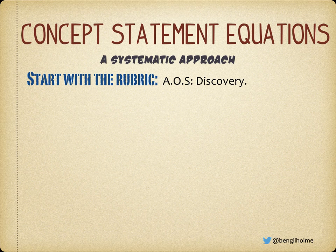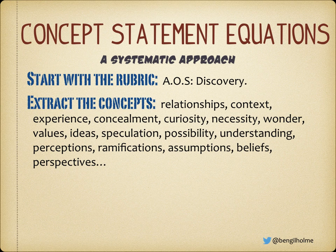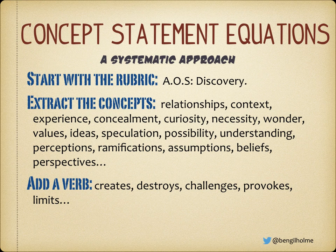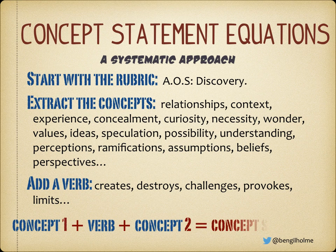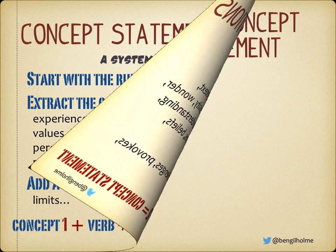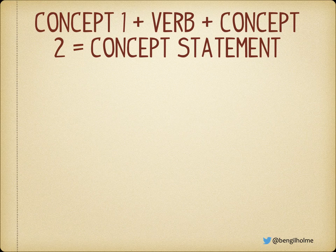The way you do this, you start with the rubric. The example I'm using is the area of study: Discovery. You read through your rubric and you extract all the concepts and make a list — in this case I've got a fairly hefty list of the concepts extracted from the rubric for the area of study Discovery. Then you make a list of all the appropriate verbs that you might be using in your writing. Then it's just a matter of taking those things and putting them together — you take a concept, you take a verb, you add a second concept, and you have a concept statement. So: concept one plus verb plus concept two equals concept statement.